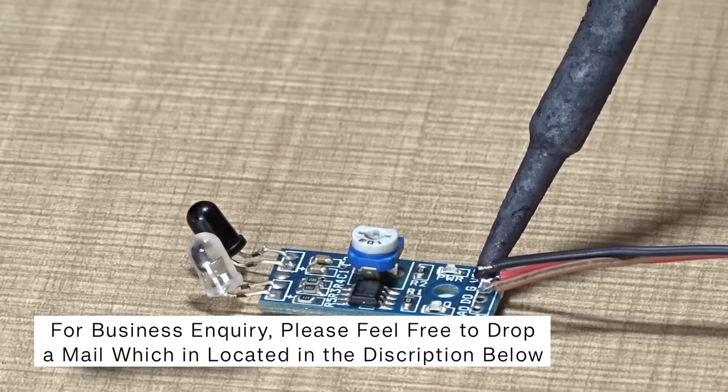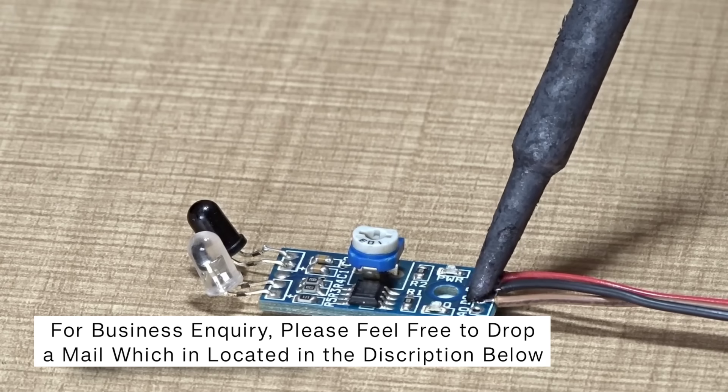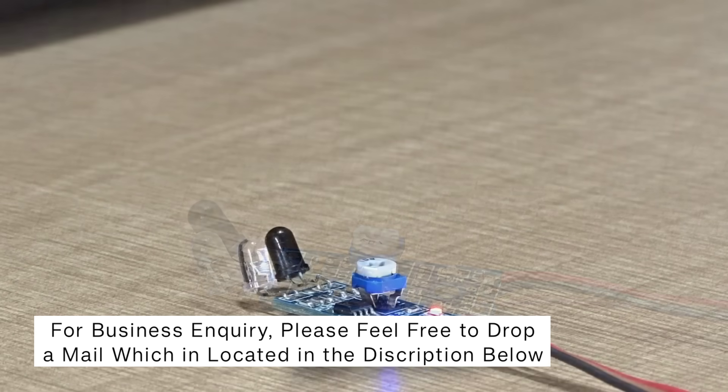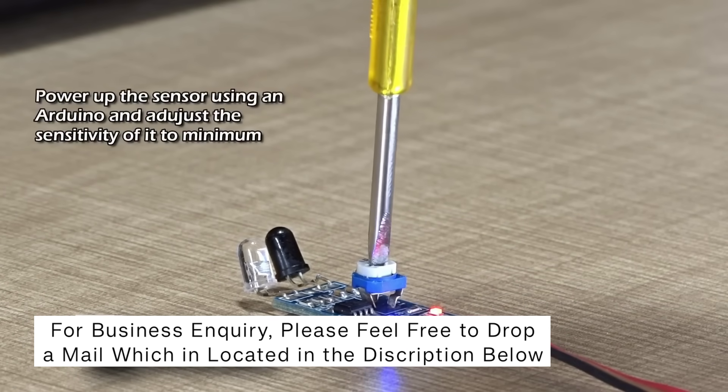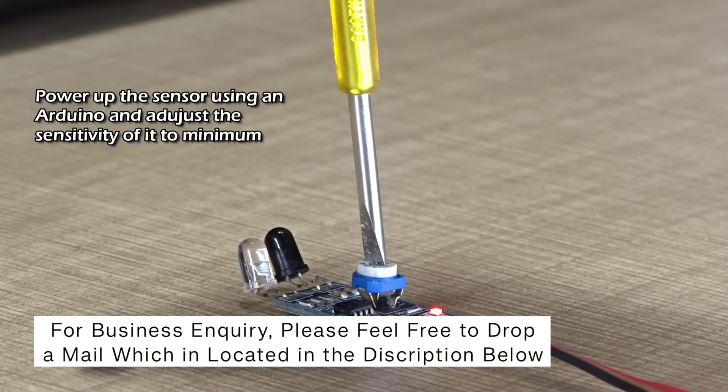Now let's complete the soldering work for the IR sensor. Make sure all the solder joints are clean, solid and properly connected for stable performance. After that, power up the sensor using an Arduino and adjust the sensitivity to the minimum level for accurate and stable readings.